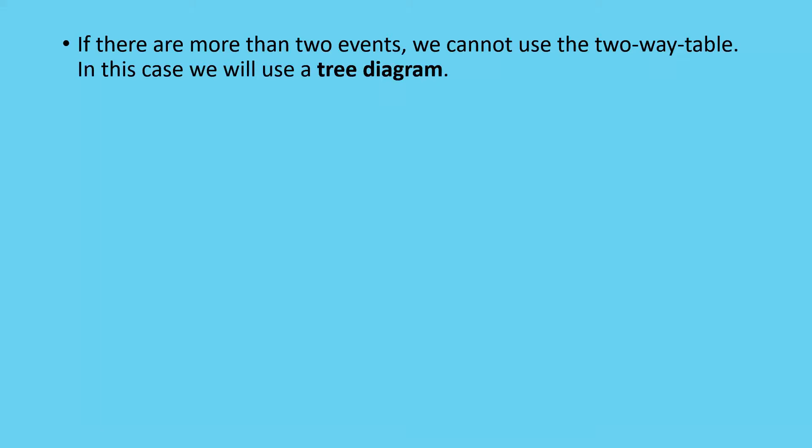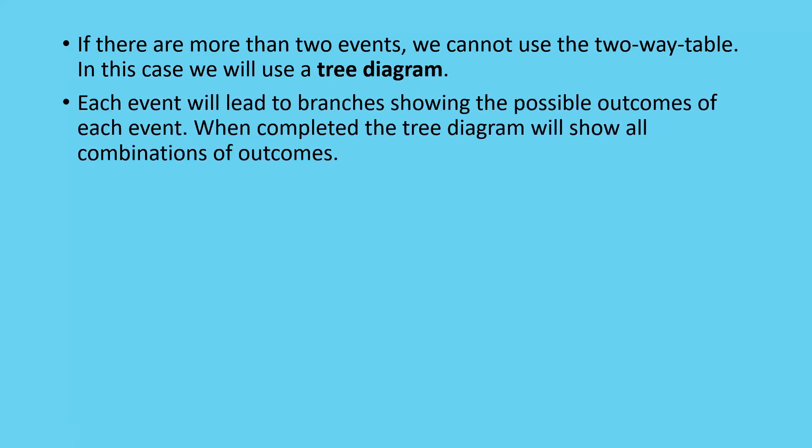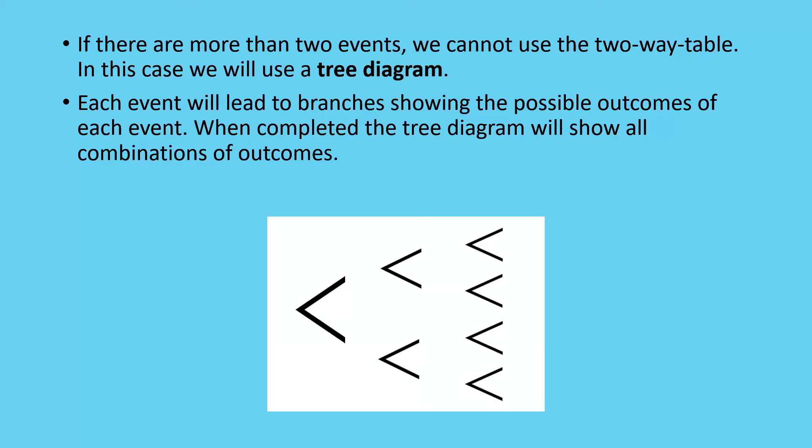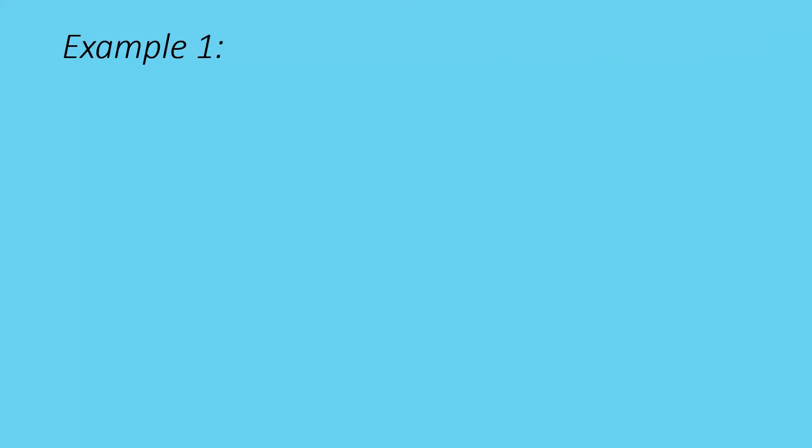When there are more than two events, such as the best-out-of-three situation, we cannot use a two-way table. Instead, we use a tree diagram. Each event leads to branches showing the possible outcomes. When completed, the tree diagram shows all combinations of outcomes — the first set is event one, the second is event two, and the third is event three.